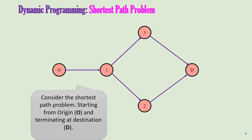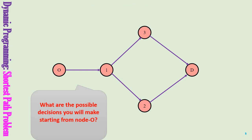Here is an instance of a shortest path problem. The graph in this slide represents the shortest path problem. The cities are represented by nodes and the paths between the cities are represented by the arcs or edges. The goal is to move from city origin, node O, to city destination, node D. Let us say you are on node O, the origin.